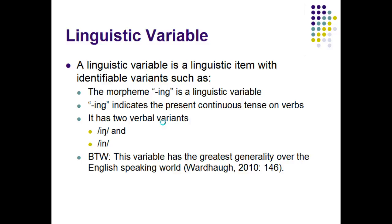A linguistic variable is a linguistic item with identifiable variants. For example, the morpheme -ing is a linguistic variable. As you know, -ing indicates the present continuous tense on English verbs. As you have also likely heard, -ing has two verbal variants: -ing and -in, such as in 'singing' and 'singin'.